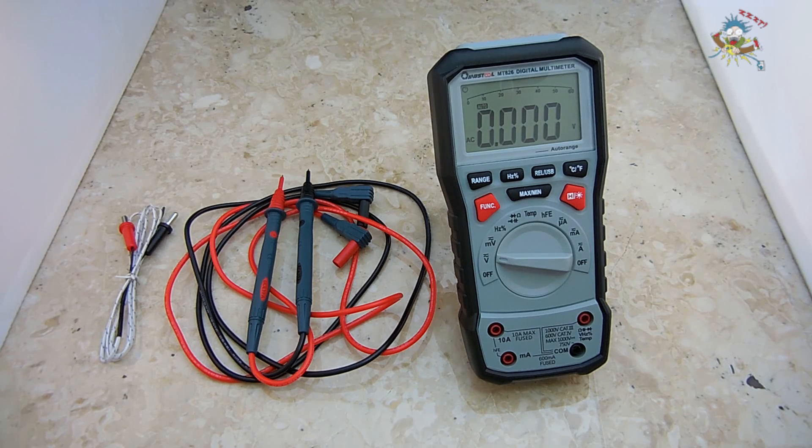The display is a 6000 count readout and the sampling rate of the unit is about three times per second. There's also an over range indicator. The DC voltage range goes from a 60 millivolt range all the way up to a 1000 volt range. The resolution at 60 millivolts is 0.01 millivolts, and at the 1000 volt range, it is a 1 volt resolution.